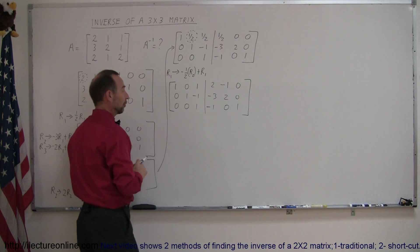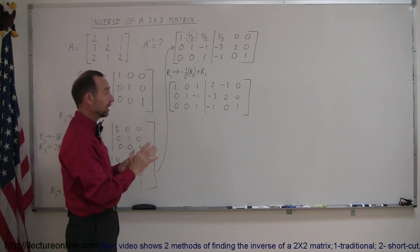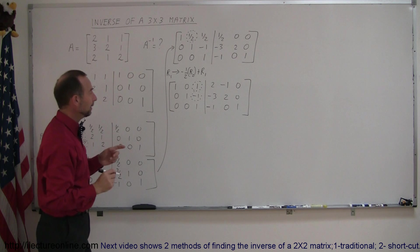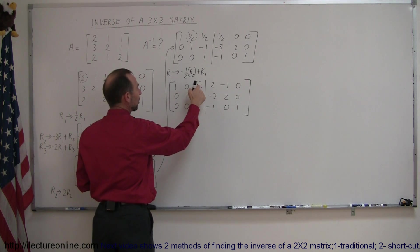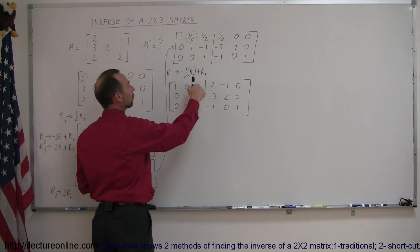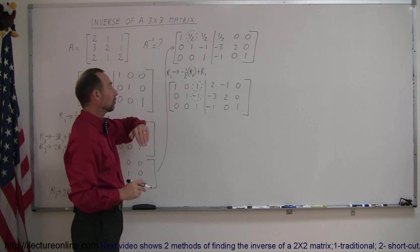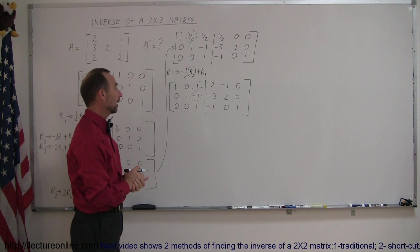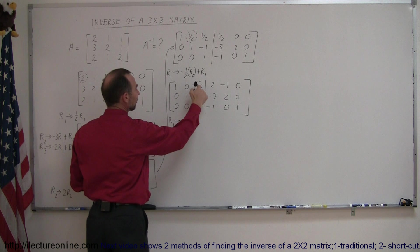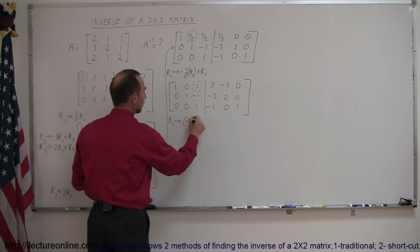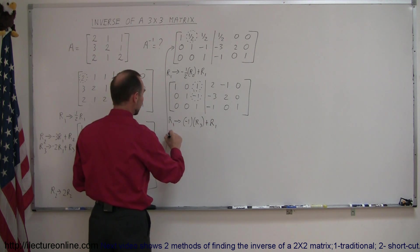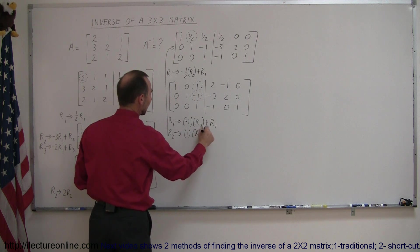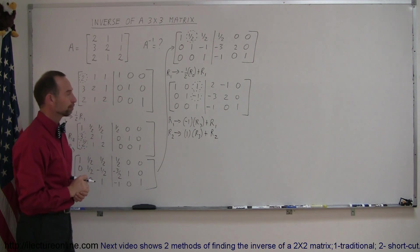We only have one more column to go — the third column. The pivot is already a 1, so I don't have to change anything there. The next step is to get rid of the elements above it in rows 1 and 2. Take R1 and replace it by negative 1 times R3 added to R1. For R2, take R2 and replace it by negative 1 times R3 added to R2.